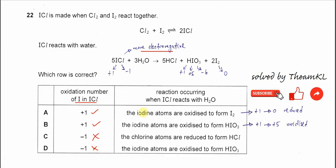So let's look at the statement which one is correct. The iodine atoms are oxidized to form iodine. So this iodine in the ICL is positive one. After reactions, it forms two compounds of iodine.